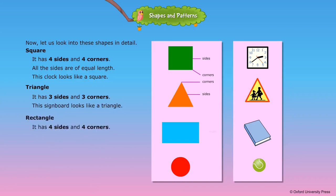Rectangle. It has four sides and four corners. The opposite sides are of equal length. This book looks like a rectangle.